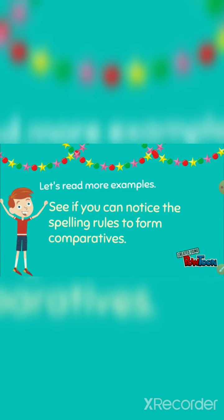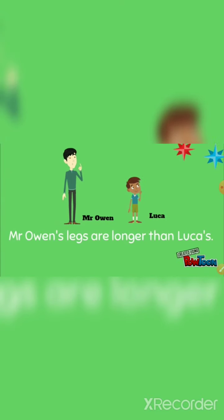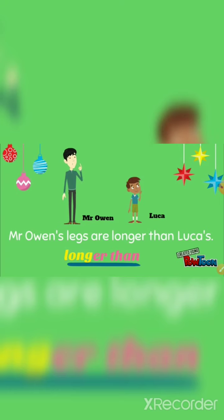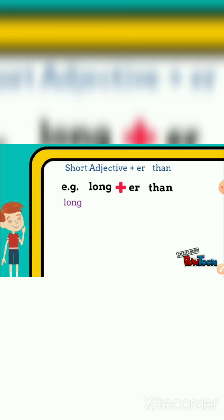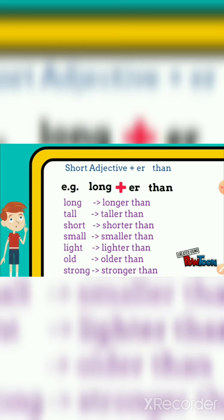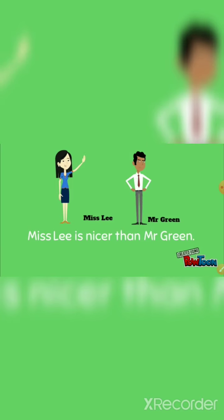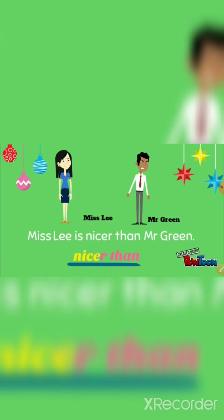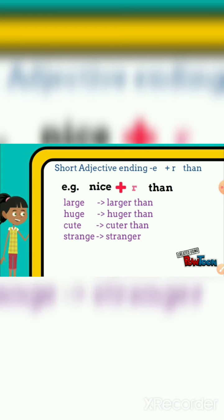Let's read more examples. Mr. Overan's legs are longer than Luca's legs. The rule for short adjectives is: adjective plus 'er' plus 'than.' For short adjectives ending in 'e', we just add 'r' then 'than.' For example, Miss Lee is nicer than Mr. Green — 'nice' ends in 'e', so we add just 'r'.